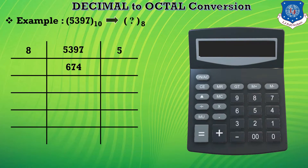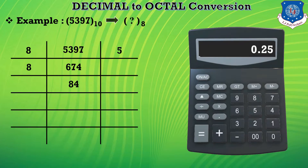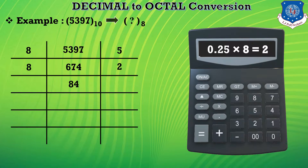In the next step, 674 is divided by 8 and we get the answer 84.625. So we write 84 as the quotient and the remaining term is 0.25. This 0.25 is multiplied by 8 and we get remainder 2.